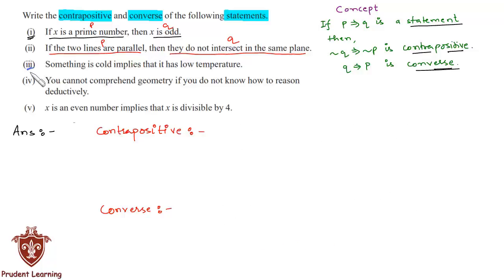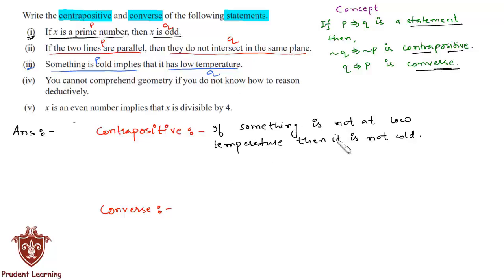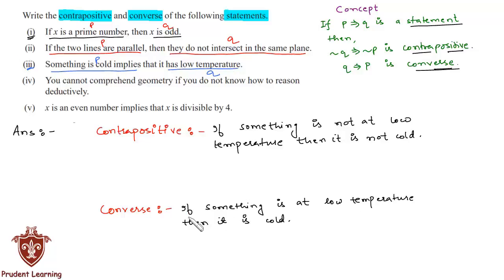The third statement is: something is cold implies that it has low temperature. We call the first part p and the second part q. The contrapositive is: if something is not at low temperature, then it is not cold. The converse is: if something is at low temperature, then it is cold.